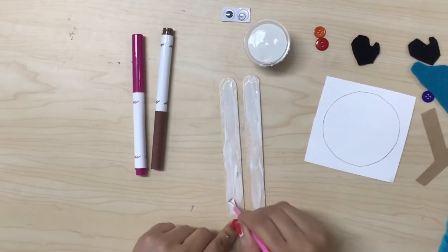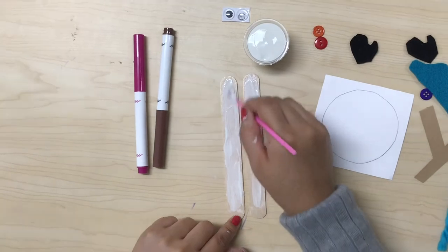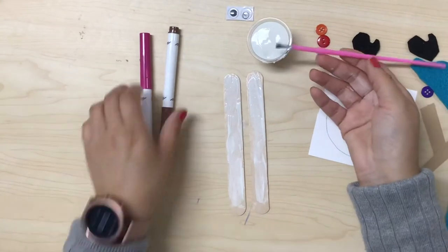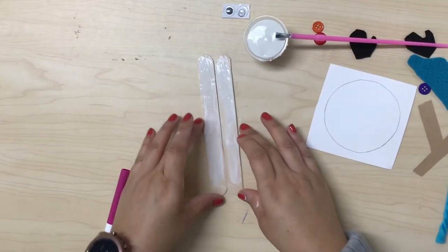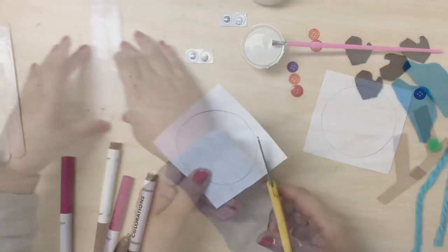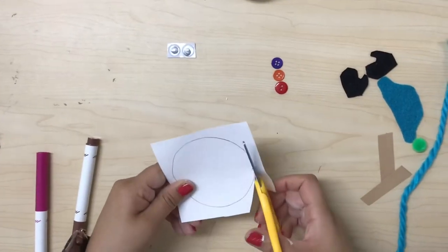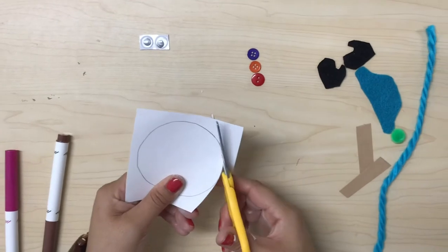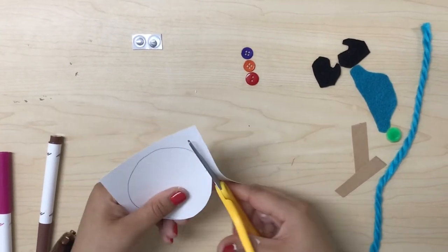Then, I am finished painting my snowman body. I will leave it apart and let it dry. Now, we are going to cut the circle. We are going to cut out the circle. It will be the face for the snowman.